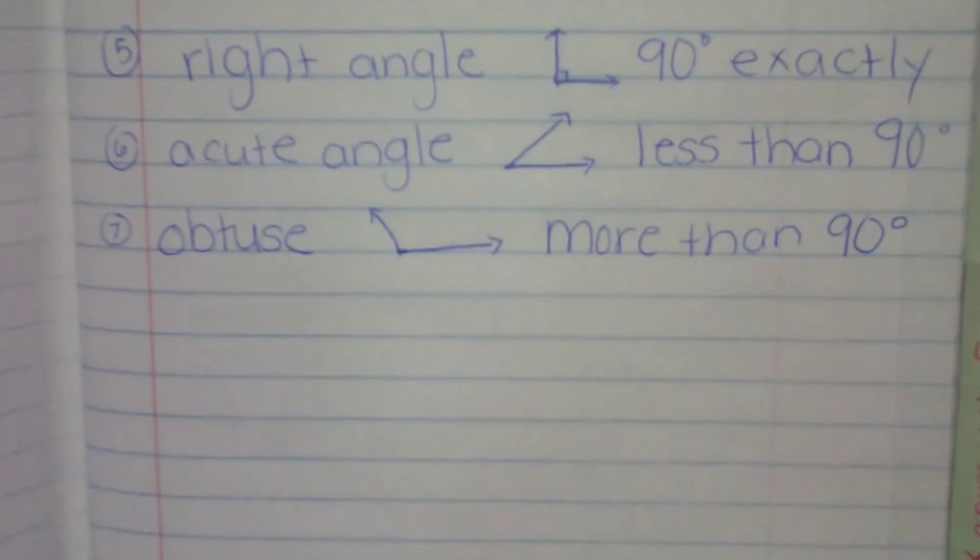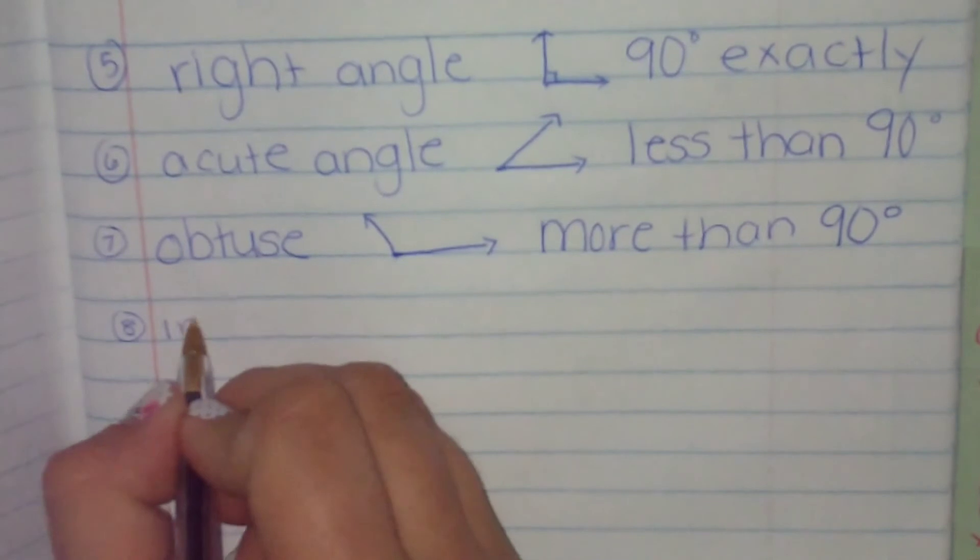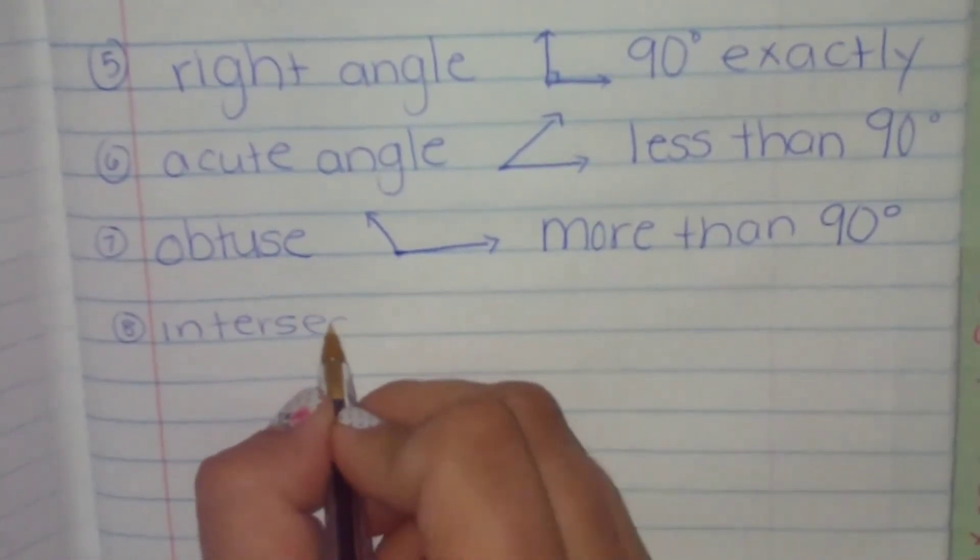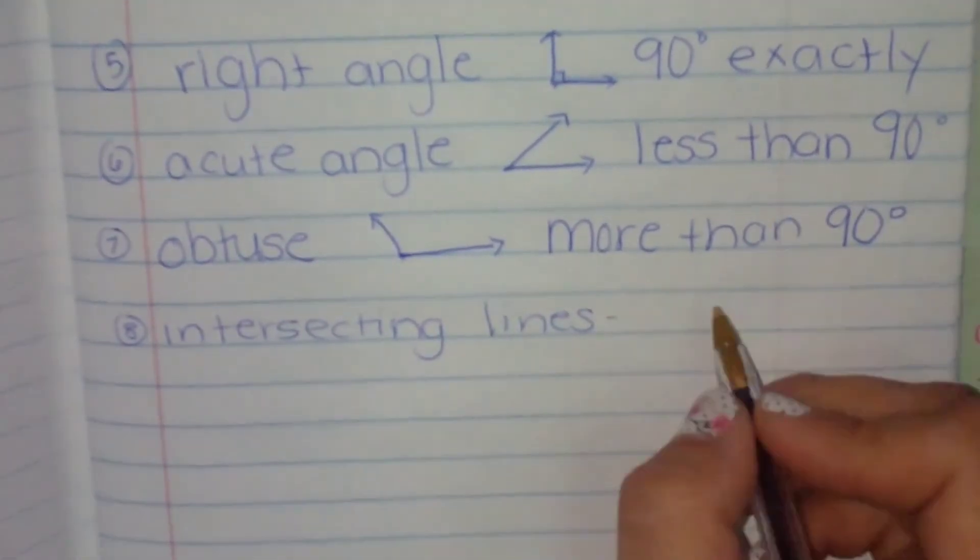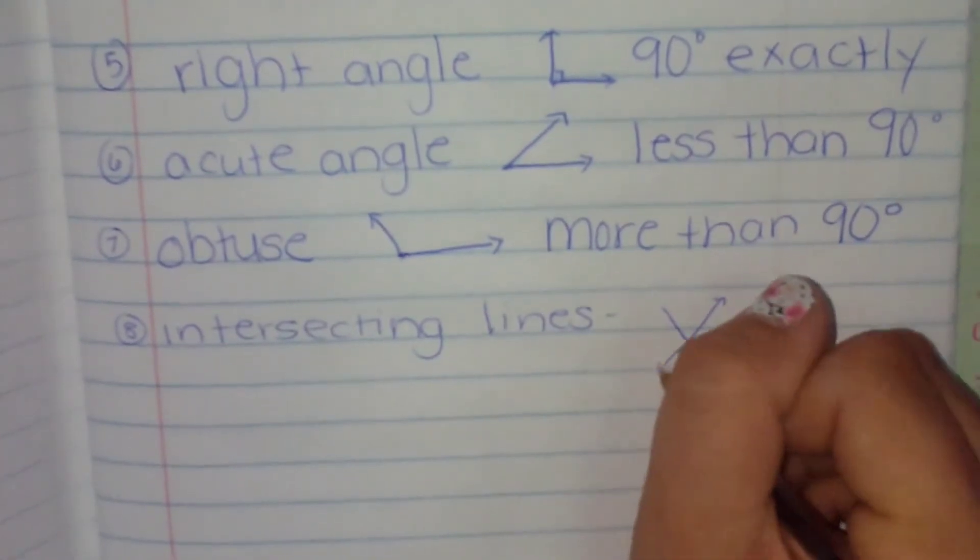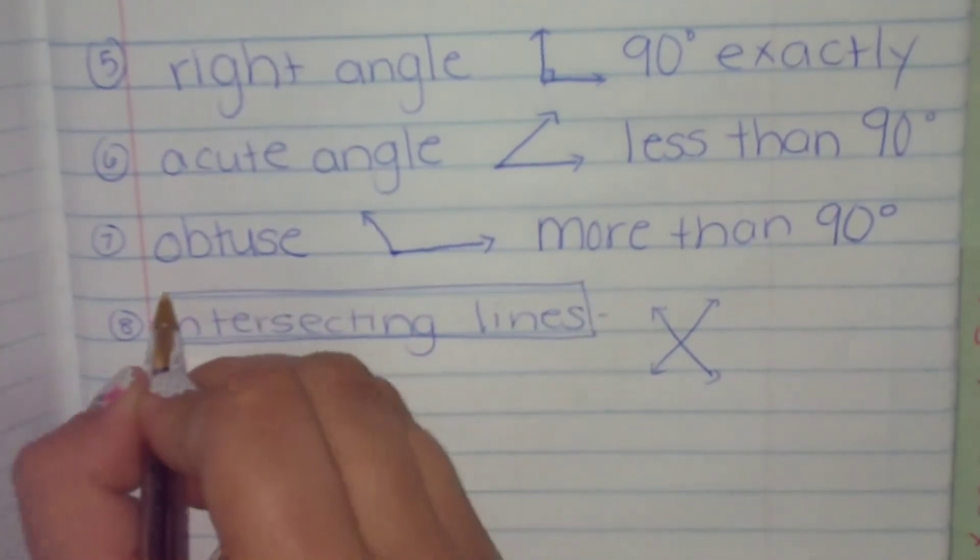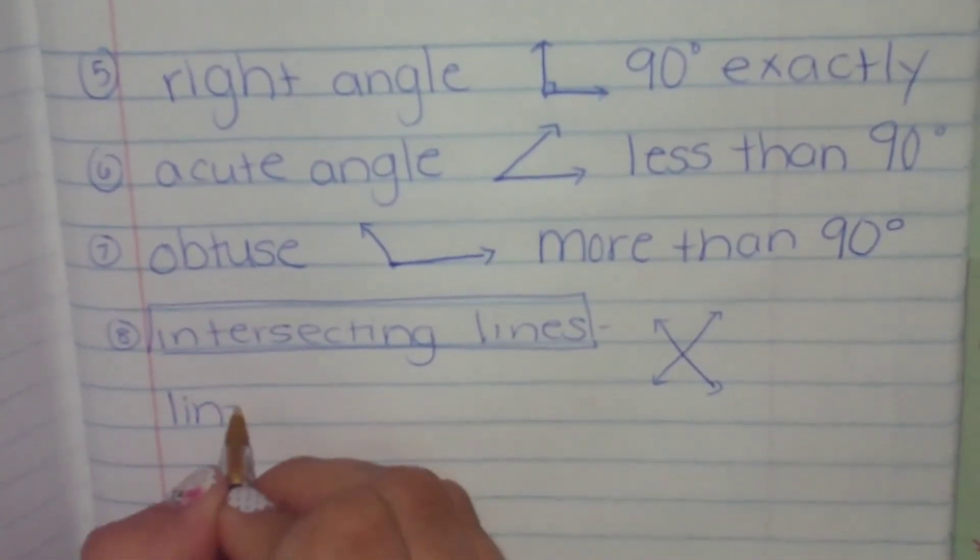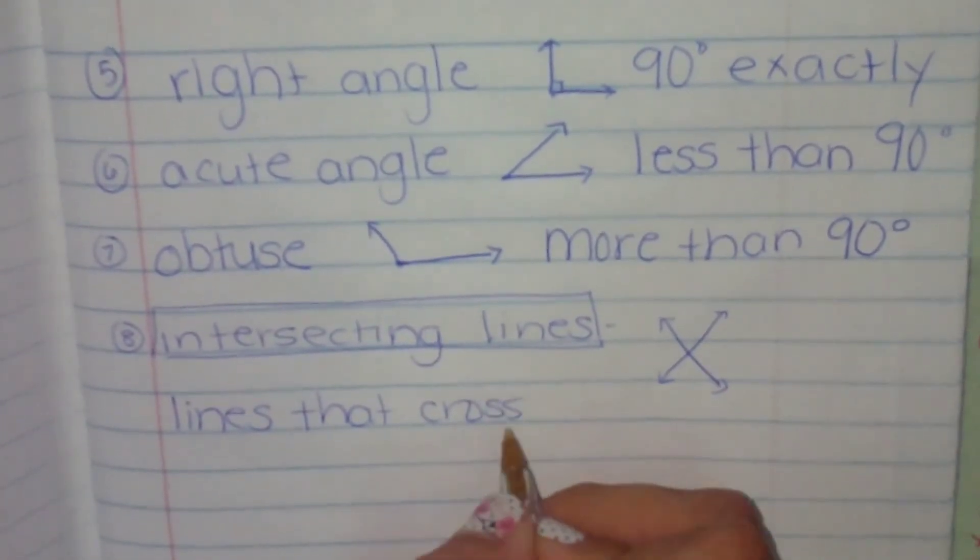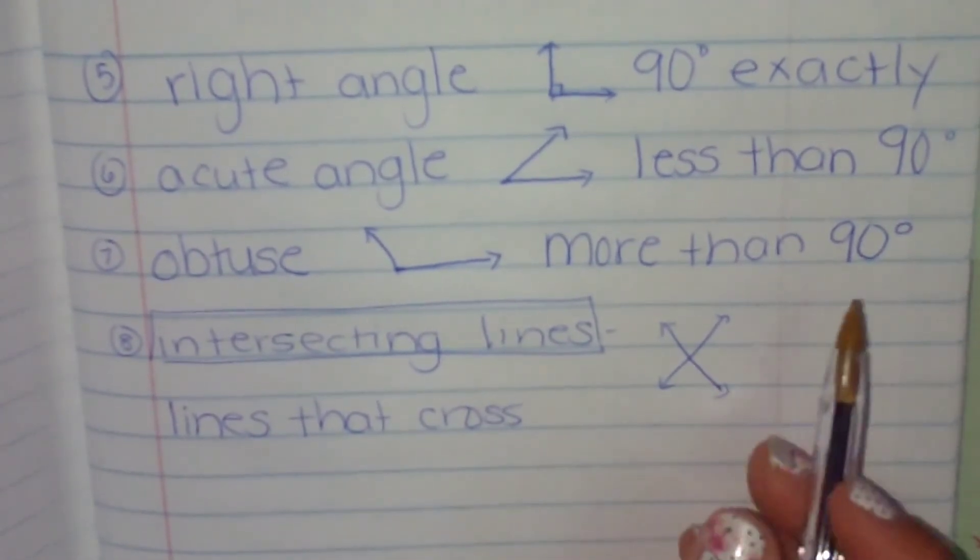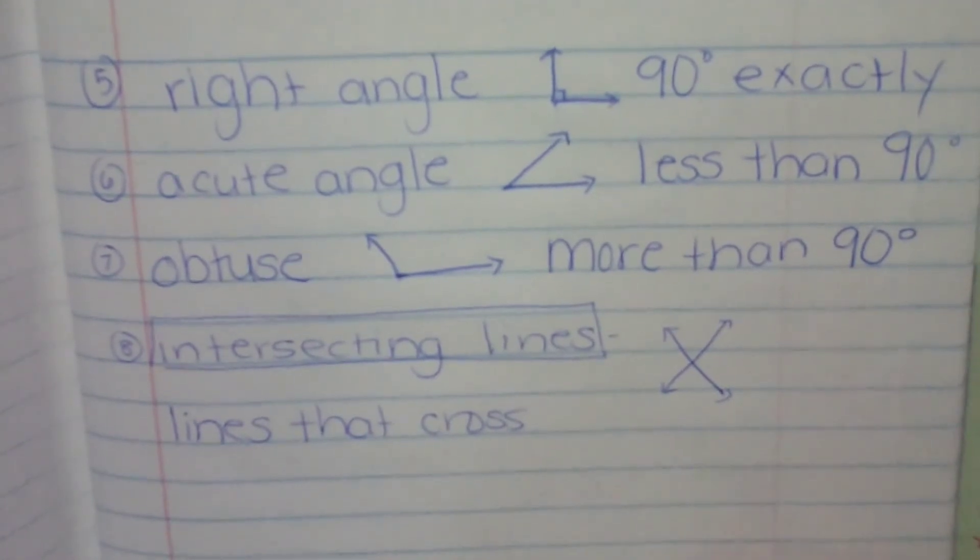And since we're talking about two lines meeting, we're going to talk about the words intersecting lines, which are lines that meet at one point. That's why they're called intersections. When you have the crossing and the red light, it's an intersection because that's where the streets intersect.